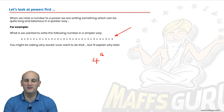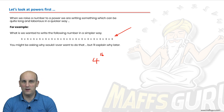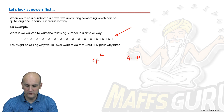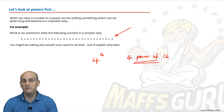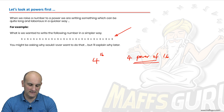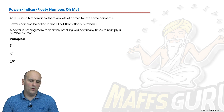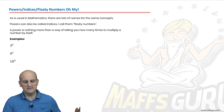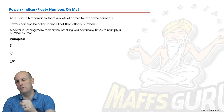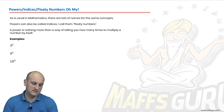Four to the power of sixteen — and listen to why I say that: 'four to the power of sixteen,' that floaty sixteen there tells you the power. So powers are those floating numbers. That's just me trying to explain it to you.